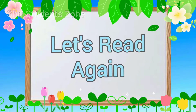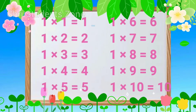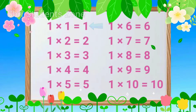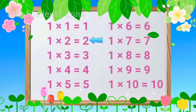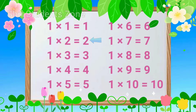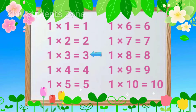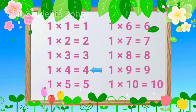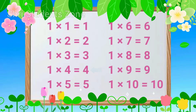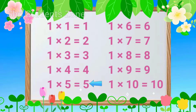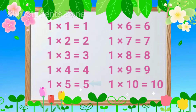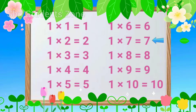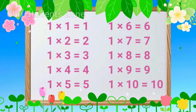Let's read again. 1-1s are 1, 1-2s are 2, 1-3s are 3, 1-4s are 4, 1-5s are 5, 1-6s are 6, 1-7s are 7.